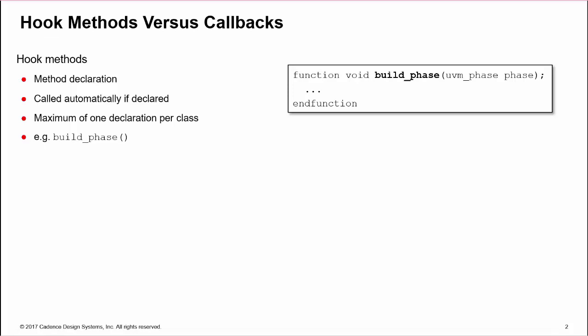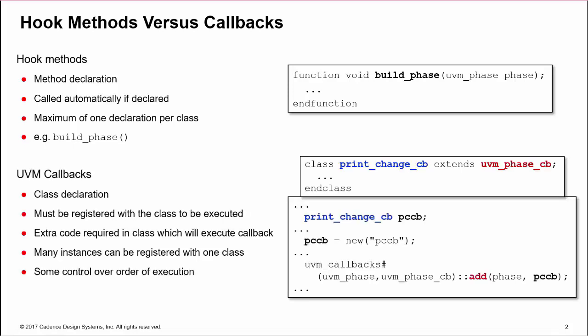UVM simulation phase methods like build_phase are effectively hook methods. UVM callbacks are a class declaration containing a method. They are not executed automatically, but must be registered with a specific component which must contain extra code to support the callback. Their advantage is that multiple callbacks can be added to a component and their order of execution can be controlled.